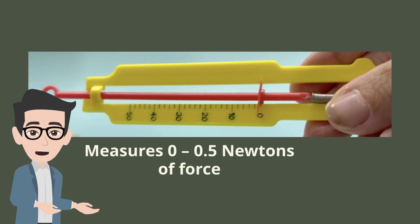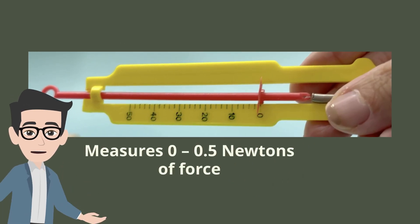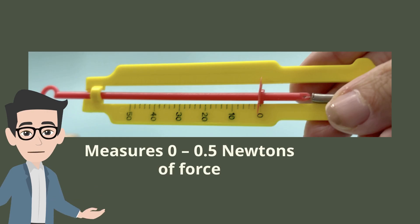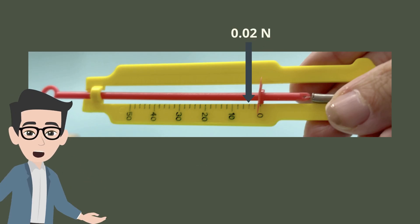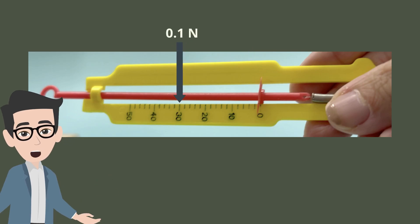Do note that the spring scale in this video can measure 0 to 0.5 Newtons of force. Each small marking on the scale represents 0.02 Newtons, while each big marking represents 0.1 Newtons.